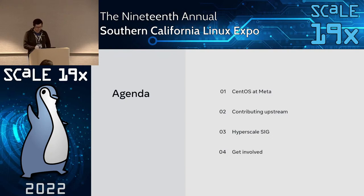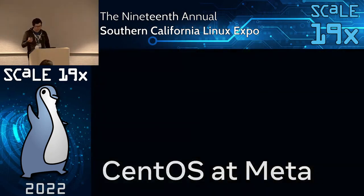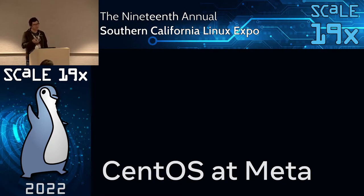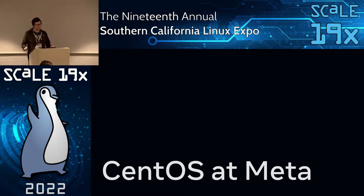We'll close with a few words on how you too can get involved. I'm a production engineer on the Linux team, which is responsible for all the components of the Linux ecosystem running in production at Facebook — the Linux distribution, systemd, components of user space, and the kernel. Before that I was on the operating systems team, which took care of deployment and maintenance of the distribution in production.